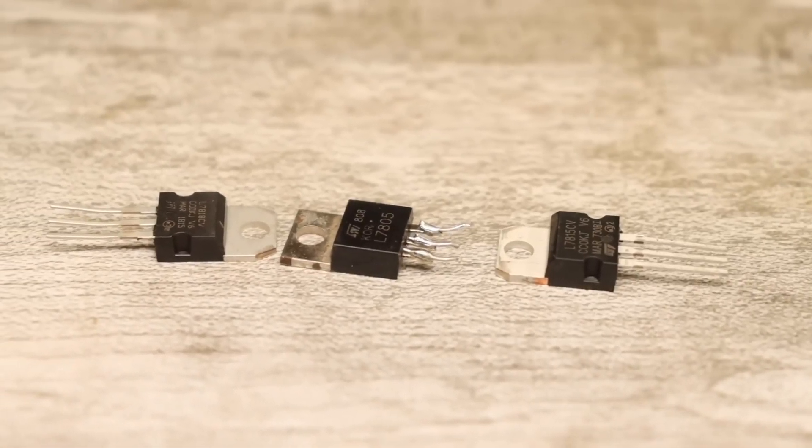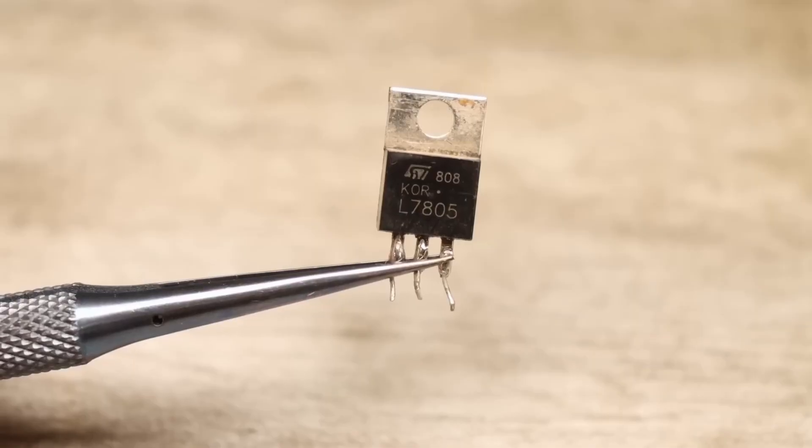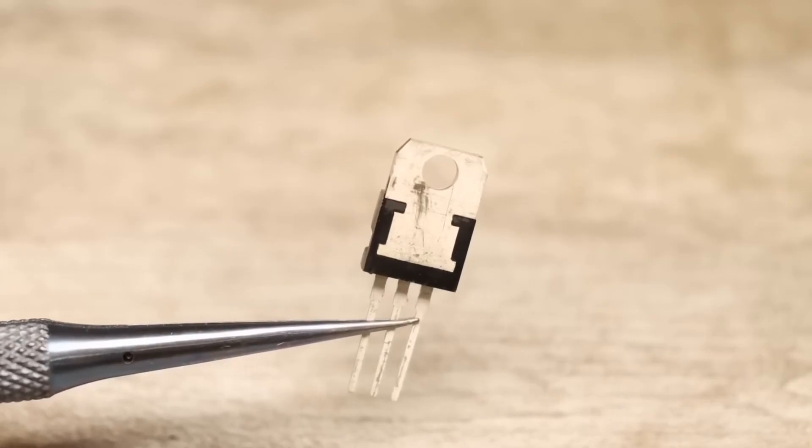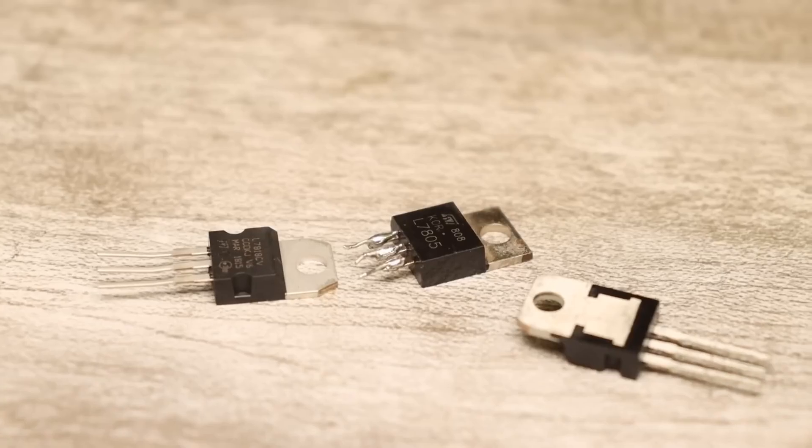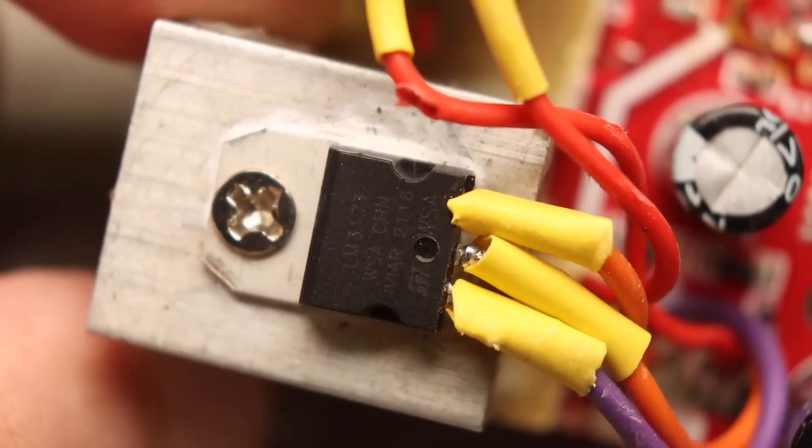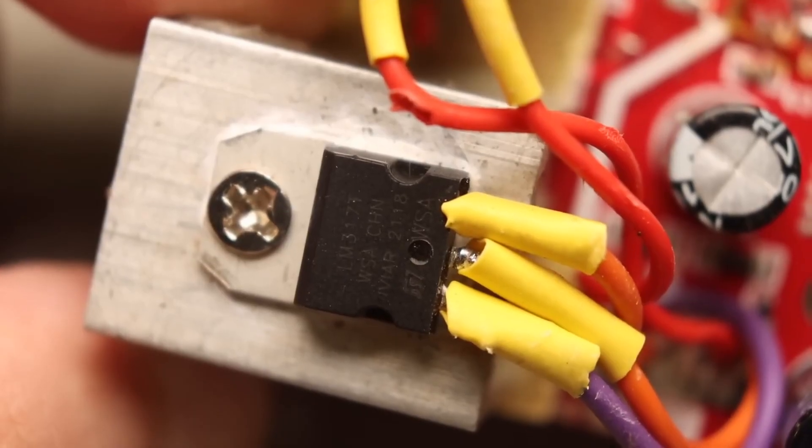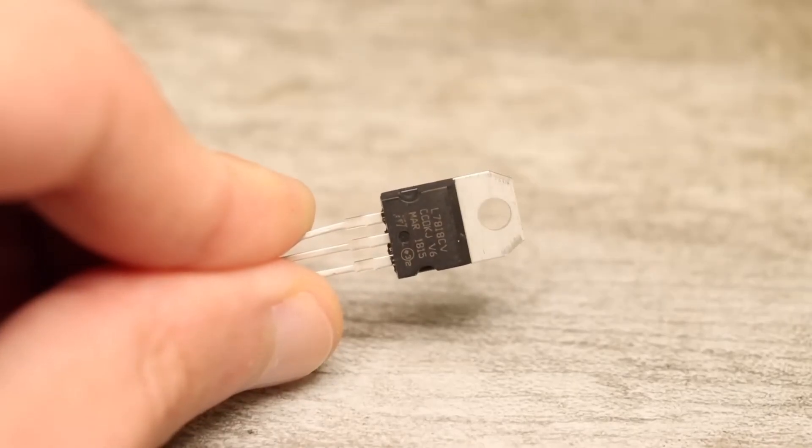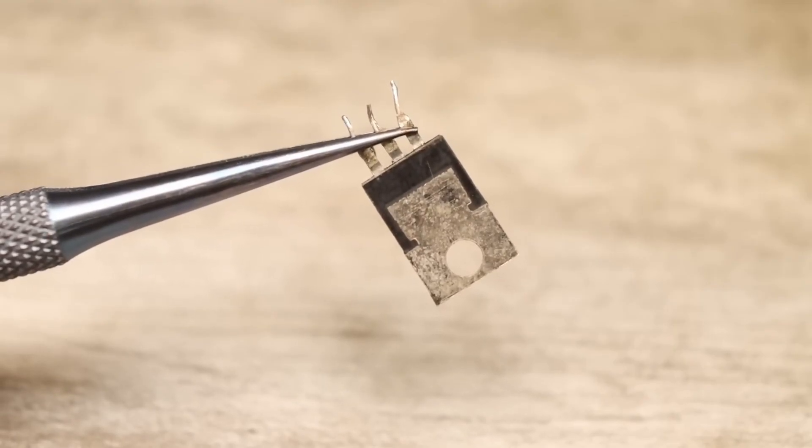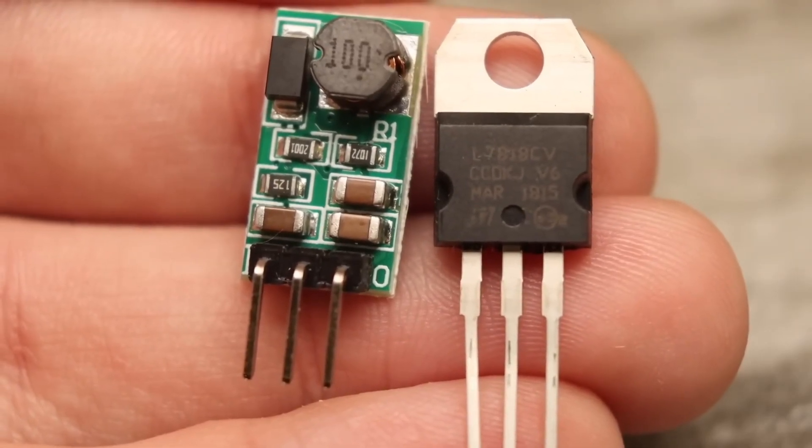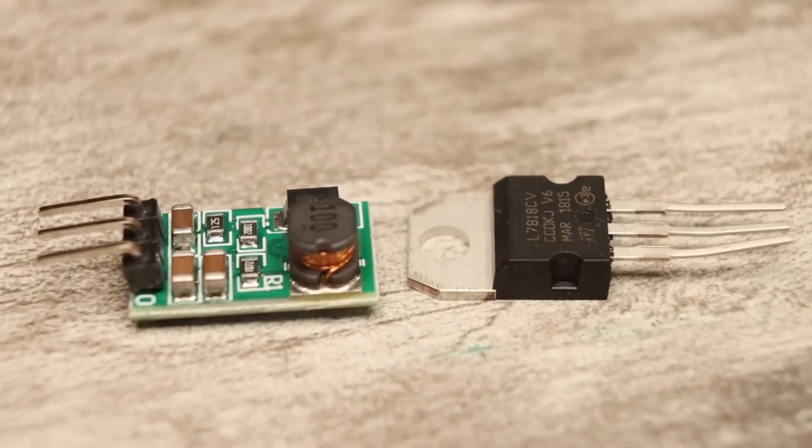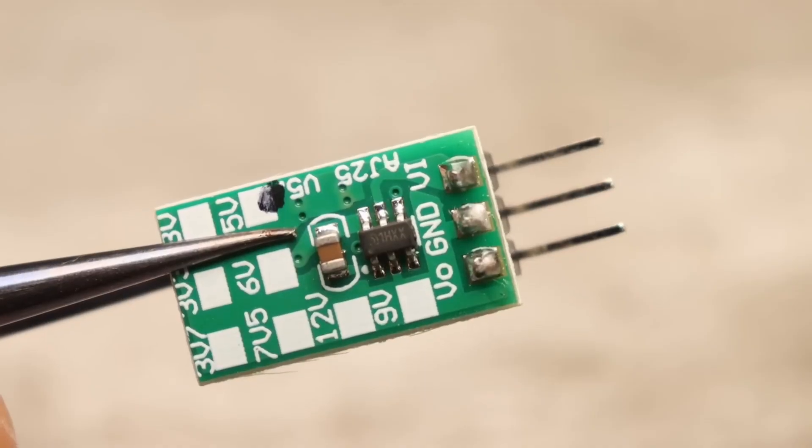I think all of you are quite familiar with popular linear regulators like the 7805. It's a simple solution if you need to lower the voltage to a certain value. There are regulators with a fixed voltage, and there are adjustable ones, like the LM317. Their main drawback is their linear mode of operation. The greater the difference between the input and output voltage and the higher the output current, the more losses are dissipated as heat in the chip. The Chinese have switching analogs of such chips. In terms of size and pin layout, they match classic linear regulators in a 2220 package.